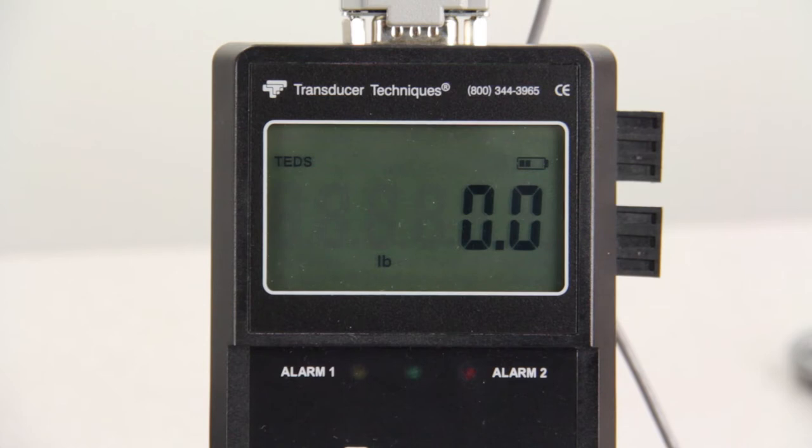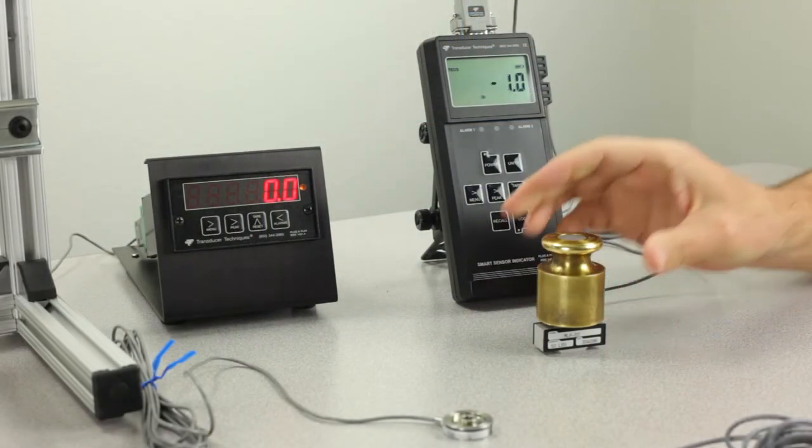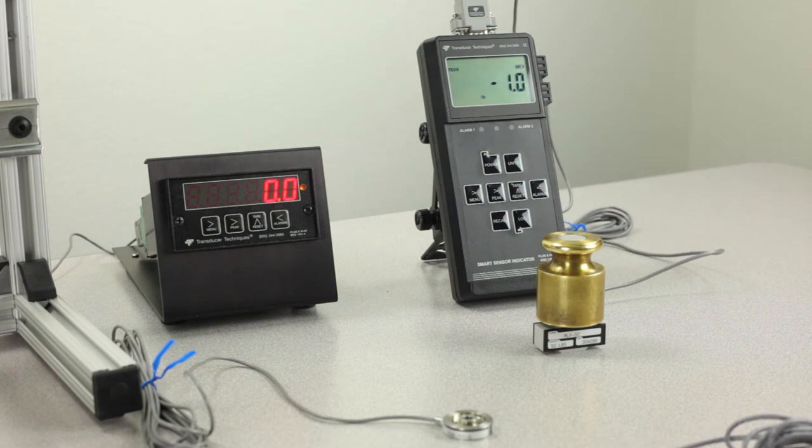The SSI is also showing pounds, letting the user know the engineering unit you're calibrated in. Now I'll put a 1 pound weight on the load cell and the display is reading 1 pound. You can also use a non-TEDS load cell with the SSI. I'll show you that calibration process in the SSI user video.